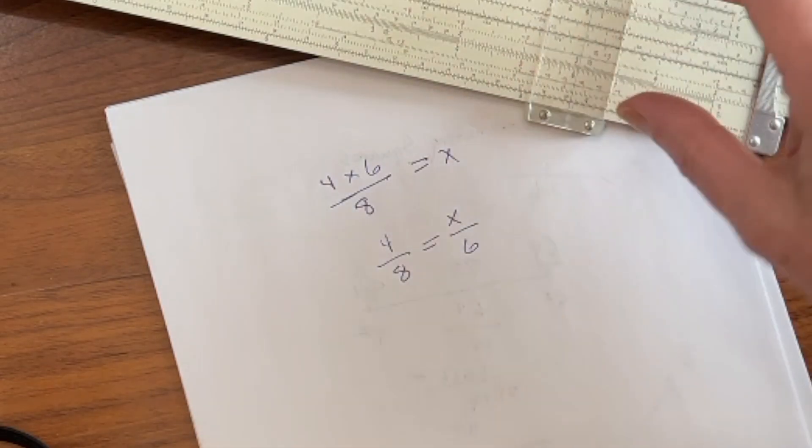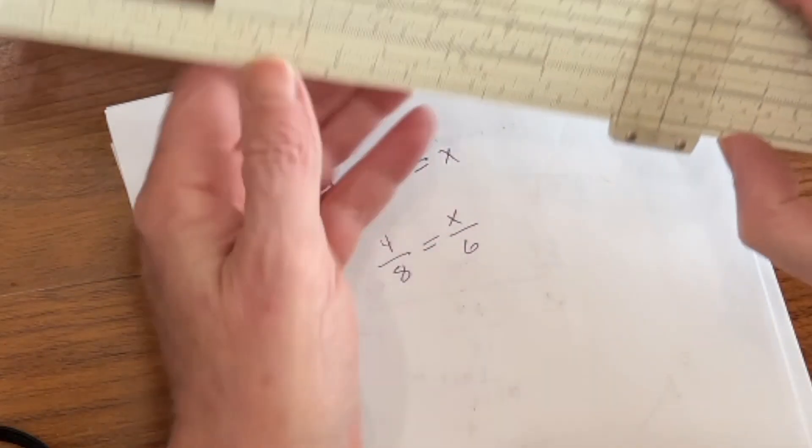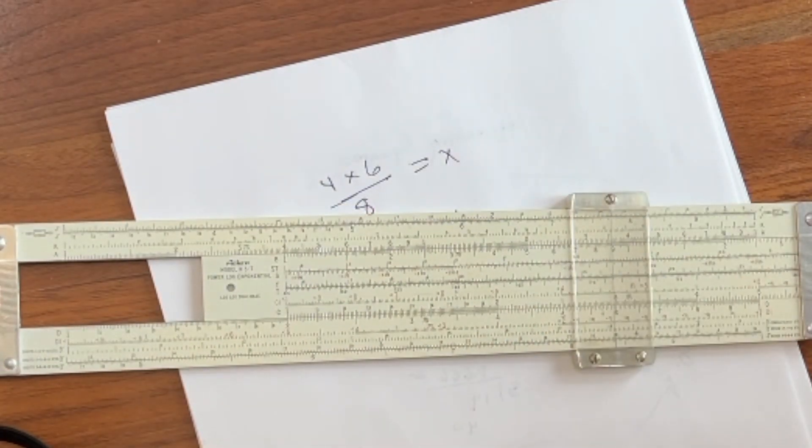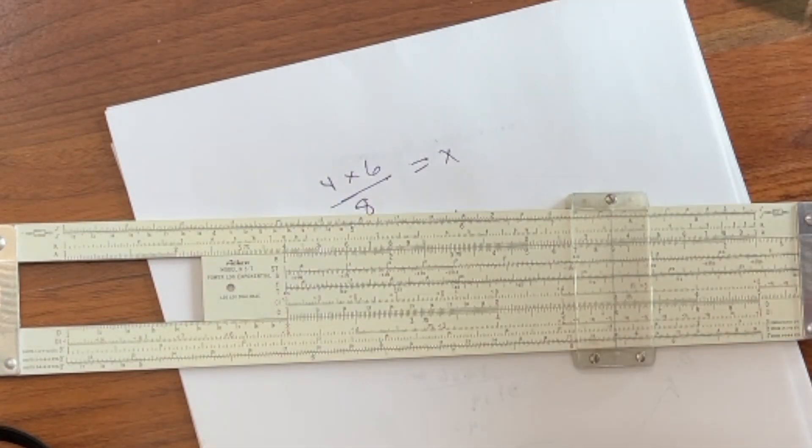Well, how does this work? It's based on something called the table function of the slide rule. So, for example, if we look at the slide rule right now, we have 1 over 2.